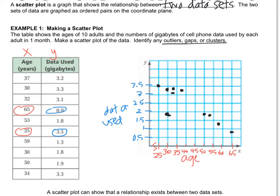So we've got this scatter plot and there seems to be a little bit of a trend — as people get older, they are using less data. Now we have to identify outliers, gaps, or clusters. An outlier is something that seems to lie outside of the other data, like this 30-year-old who doesn't use as much data as the other 30-year-olds. That's our outlier.